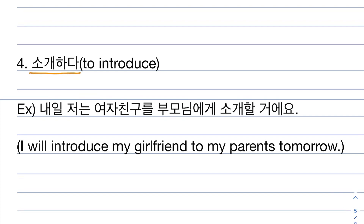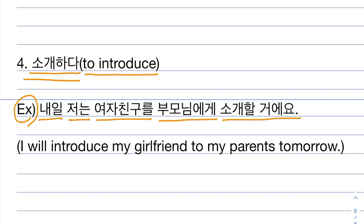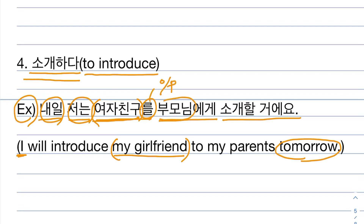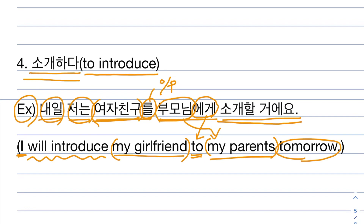Number four. 소개하다 means to introduce. Example: 내일 저는 여자친구를 부모님에게 소개할 거예요. 내일 is tomorrow, 저는 is 'I' in a polite way, 여자친구 is my girlfriend, 를 is object particle, 부모님 is my parents, and 소개할 거예요 means will introduce. So this means 'I will introduce my girlfriend to my parents tomorrow.'